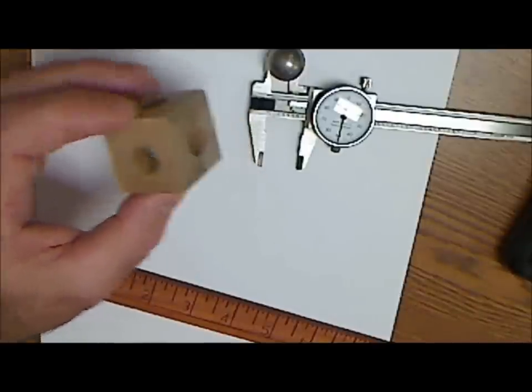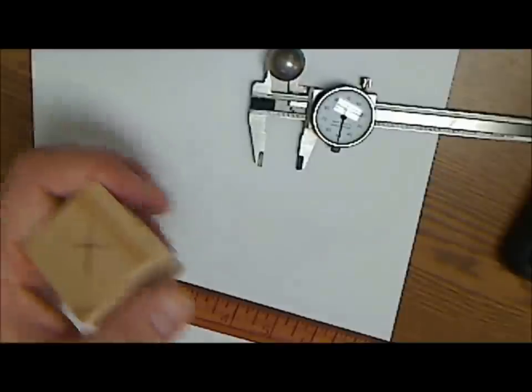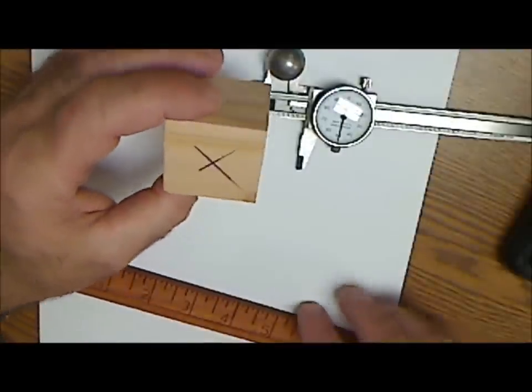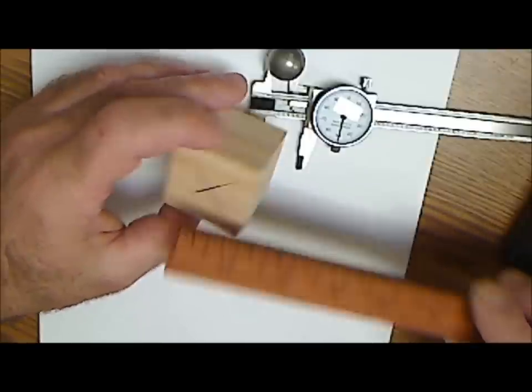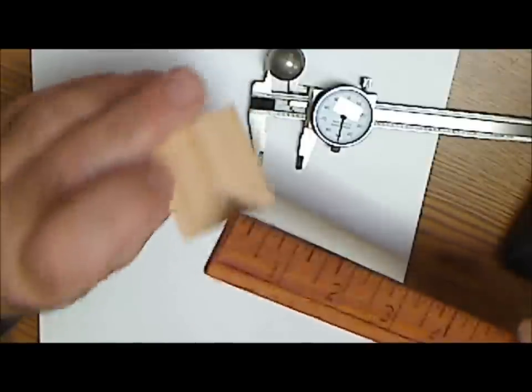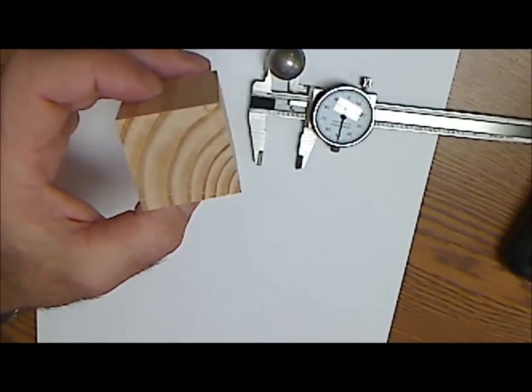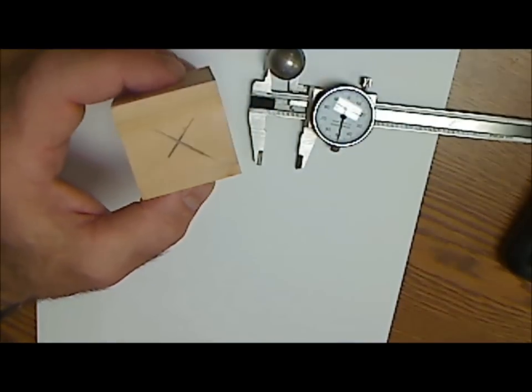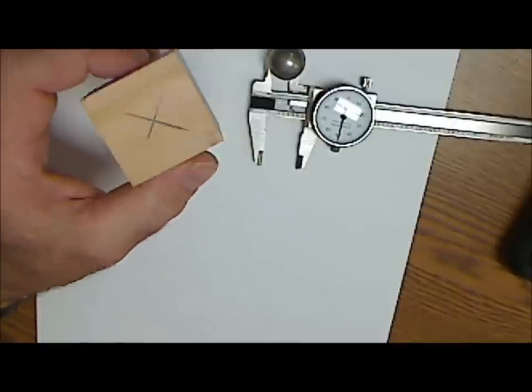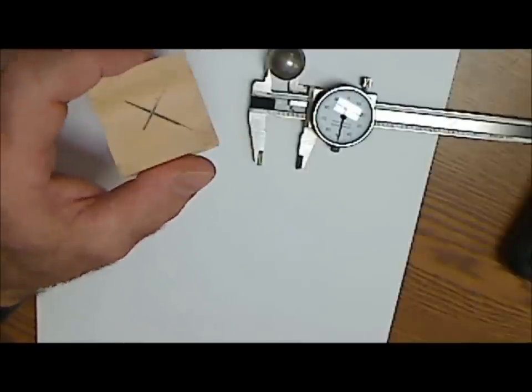First thing you want to do is get your wooden block. This cube is one and a half by one and a half by one and a half. Really important that you use soft wood with pretty open grain. Pine is kind of the best. This is actually fir, but pine would probably work the best.